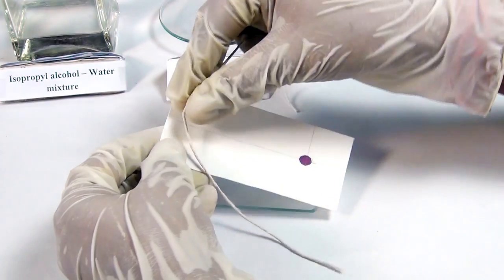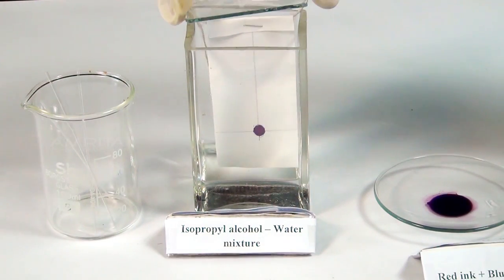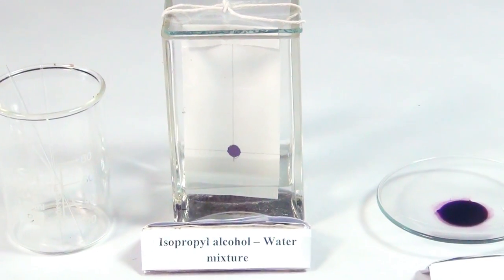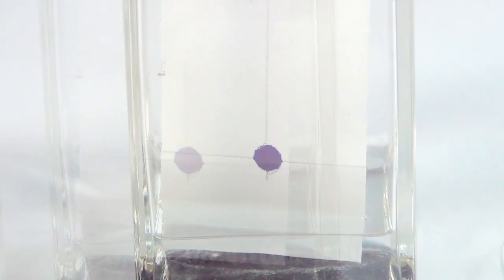Take a piece of thread and tie the filter paper to it. Suspend the filter paper vertically in the chromatographic chamber containing solvent, which is a mixture of isopropyl alcohol and distilled water. Make sure that the spot remains about 1 cm above the solvent level.